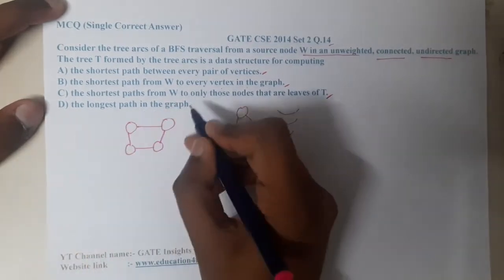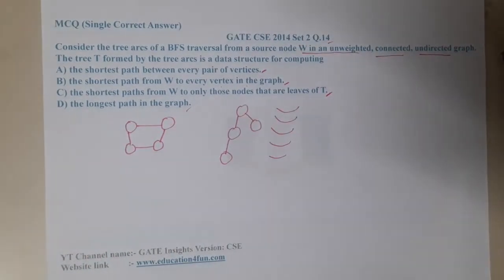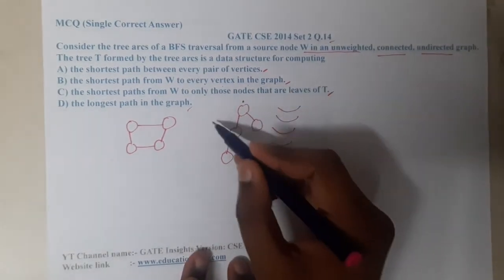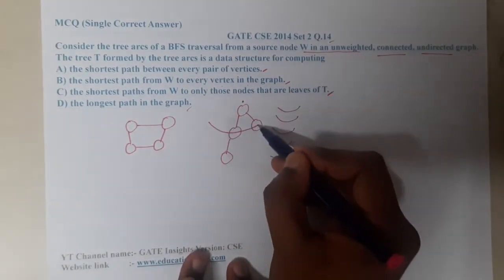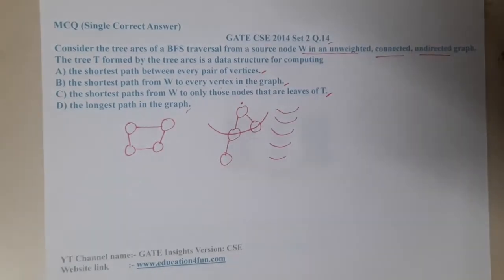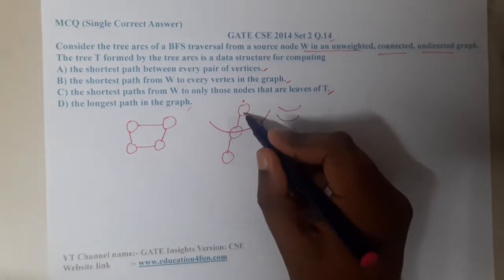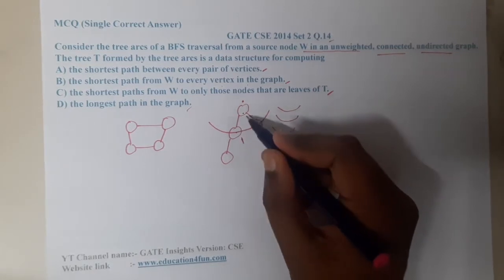Now let us start. Assume that you started here. You went through the first layer. Once you reached the first layer, what will you understand? You will understand that the distance between this node and this node is one. Similarly, the distance between this node and this node is one.